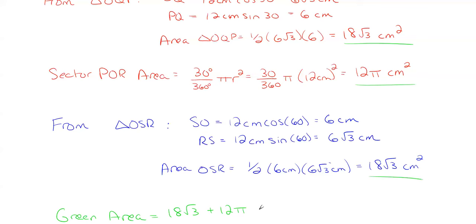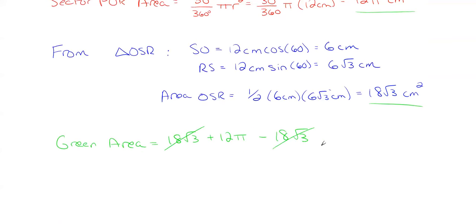And then we're going to subtract out the second triangle which is 18 square roots of 3. So as I said basically you are left with your circle sector here.